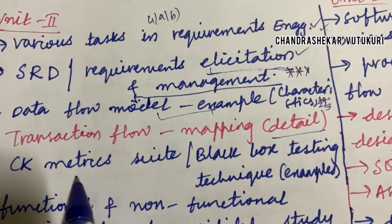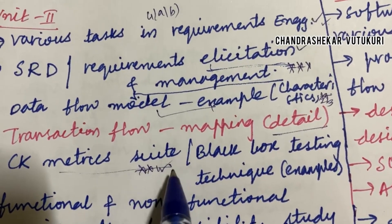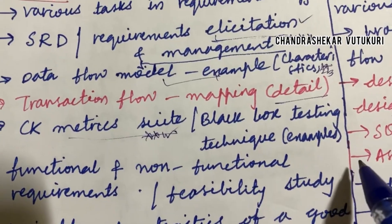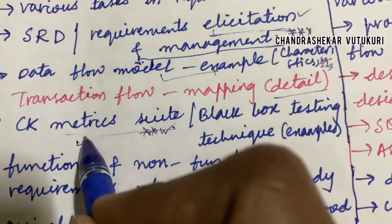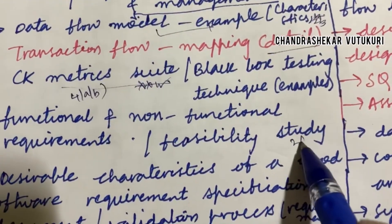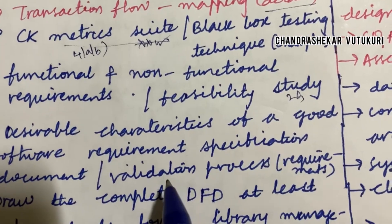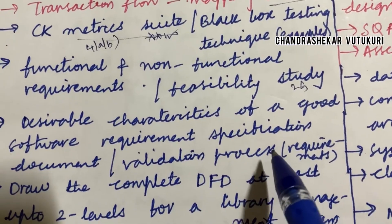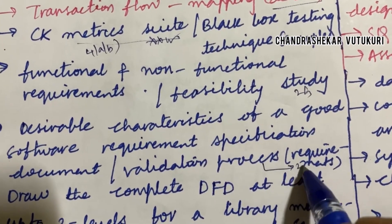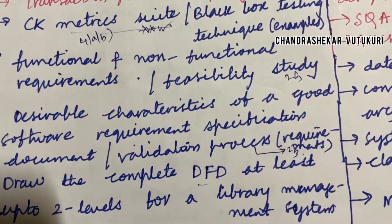CK matrices and related metrics — you are going to get one question for sure. Black box testing, functional and non-functional requirements — you may be getting 4A as well as 4B here. Feasibility study — the term may be two or three marks. Desirable characteristics of a good software requirement specification, and the validation process and its requirements, may also be two or three mark questions.